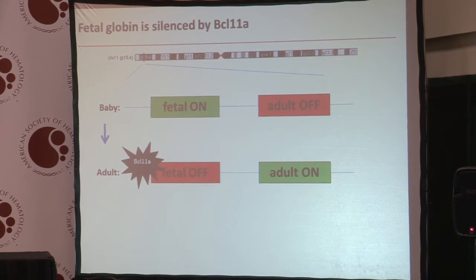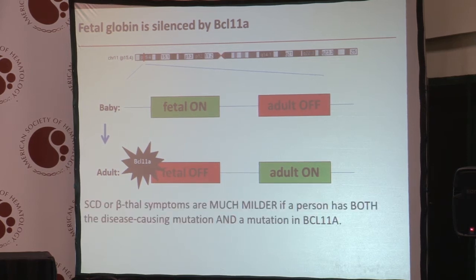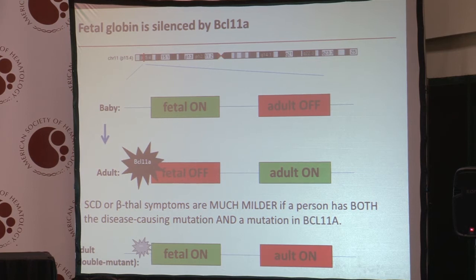Now here is the best part, and here's what's relevant to this presentation. There are rare individuals in whom symptoms of their sickle cell disease or beta-thalassemia are much milder than you expect. This is because not only do they have the disease-causing mutation, but they also have a mutation in BCL11A. And as a result, their fetal globin gene is on, and their disease symptoms are much, much milder or sometimes eliminated.